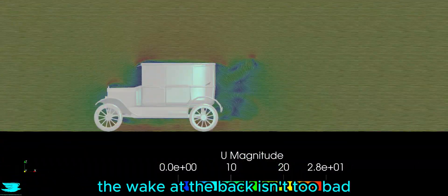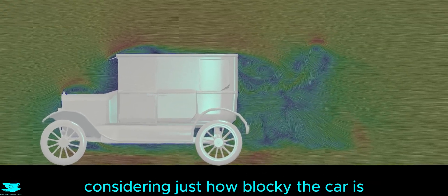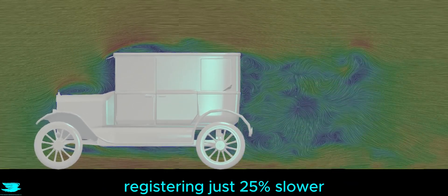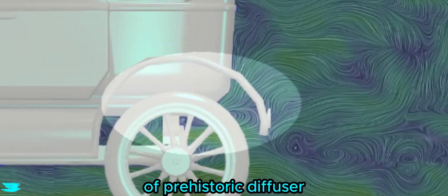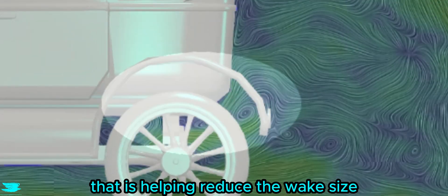Surprisingly, the wake at the back isn't too bad considering just how blocky the car is. The flow is quite fast still, registering just 25% slower than the freestream speed. There is even some kind of prehistoric diffuser at the back that is helping reduce the wake size.